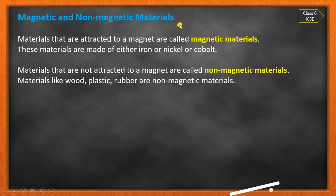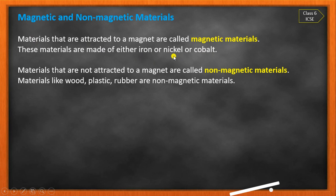Magnetic and non-magnetic materials: materials that are attracted to a magnet are called magnetic materials. Iron, nickel, and cobalt are magnetic materials which are attracted towards the magnet. Materials that are not attracted towards the magnet are called non-magnetic materials. Examples: wood, plastic, and rubber — magnets have no effect on them.